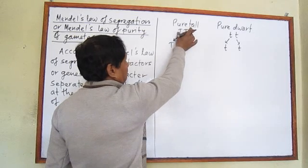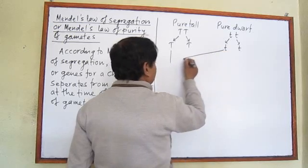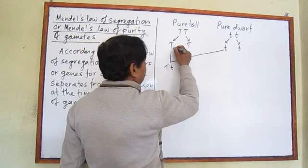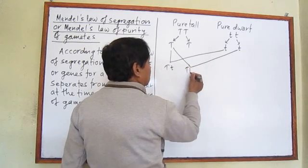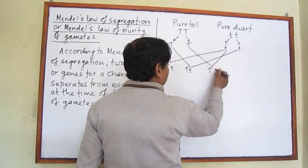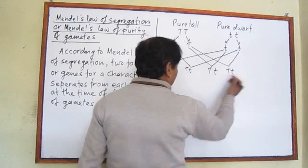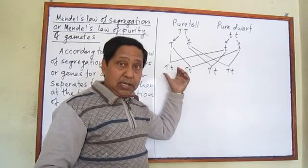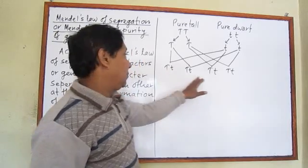When he crossed the pure tall pea plant with the pure dwarf pea plant, he found these genes separate from each other. One gene combines with another, forming different sets of genes. In every set, what is the same is that one T is capital, which carries the character of tallness, and another is small t, which carries the character of dwarfness.